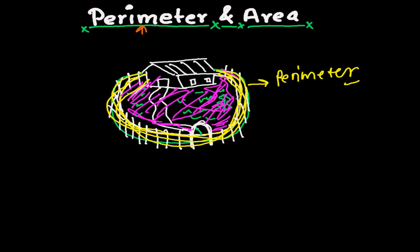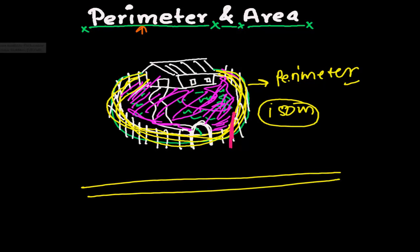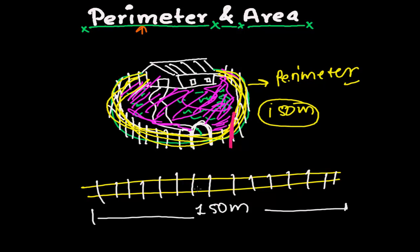Suppose this whole fence length is around 150 meters. So here 150 is the perimeter of this land. And if you cut this whole fence somewhere and elongate it in a straight line, then its length should be 150 meters. This much lengthy fence we need to make around this land, and this length is the perimeter of this land.